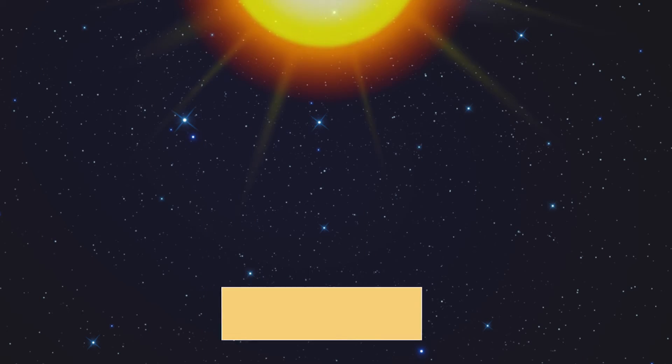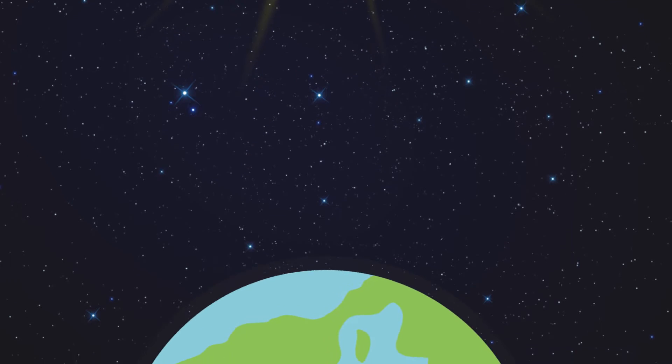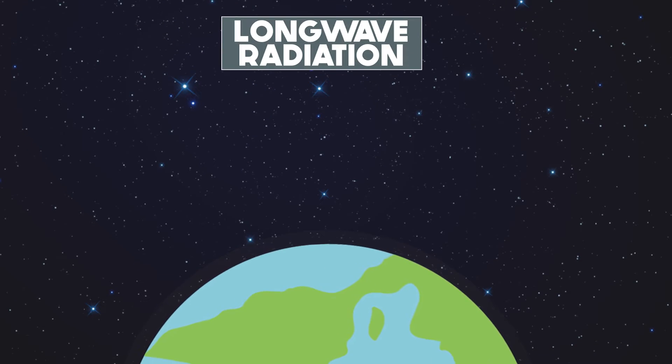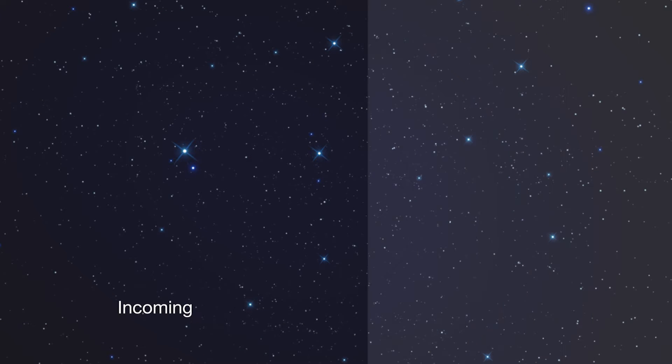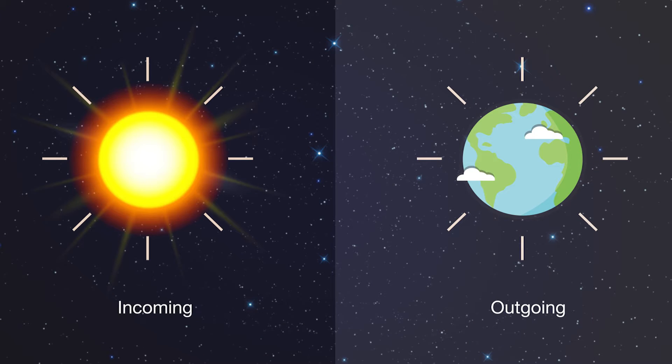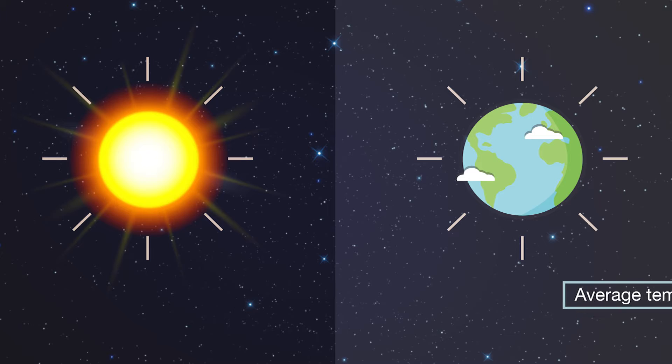The Earth's energy budget determines the globally average temperature of Earth, which governs whether we have a liveable planet covered in beautiful plants and animals, or a cold, barren landscape. The essence of the Earth's energy budget is the balance between incoming shortwave radiation from the sun and outgoing longwave radiation from the Earth itself. When the incoming and outgoing energy are in balance, then the Earth's average temperature stays constant.